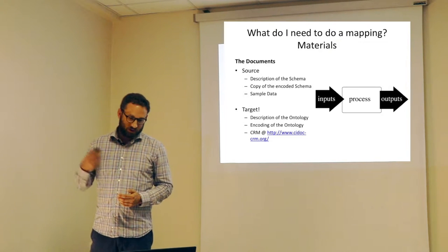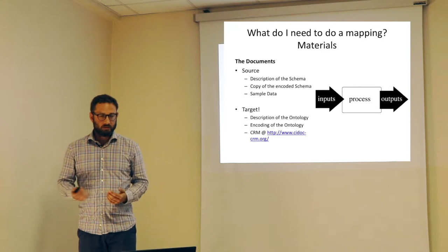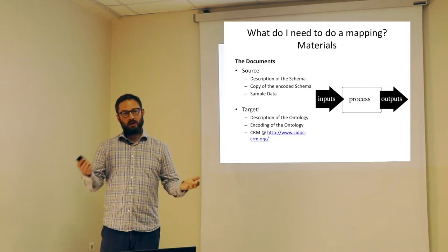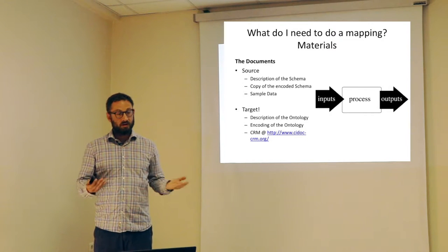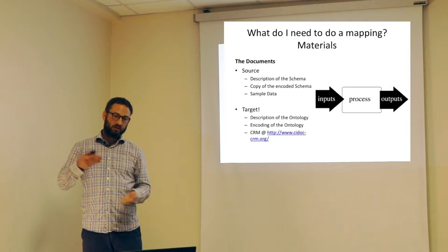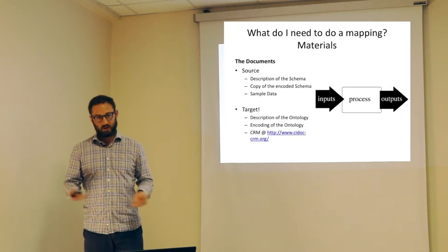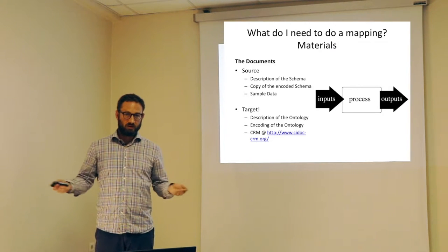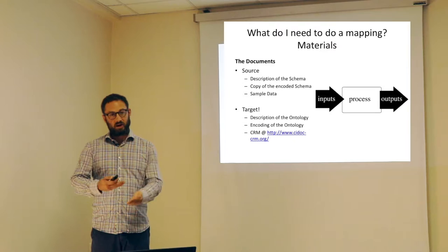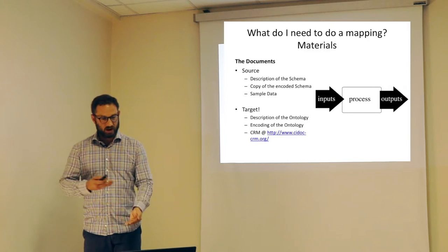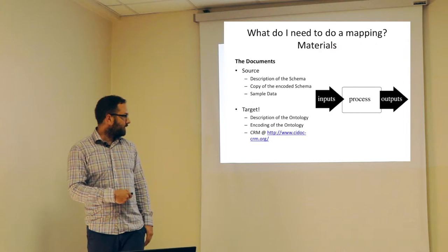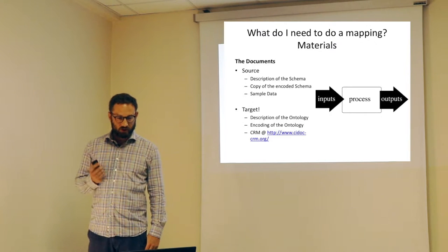On the side of the ontology — the target data structure you want to map to — you want the specification document of the ontology, which gives a description of what classes and properties are in the ontology and what they're used for. You also want some sort of encoding of the ontology, usually an RDFS file or an OWL file; you'll need that eventually to do the actual translations of data into the ontology format. For CIDOC CRM, you can find all those documents at cidoccrm.org.